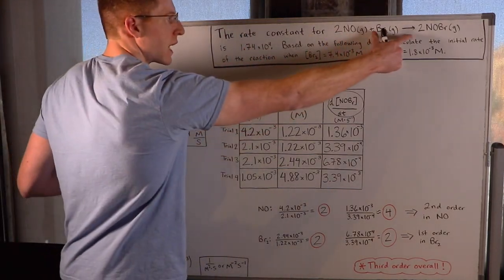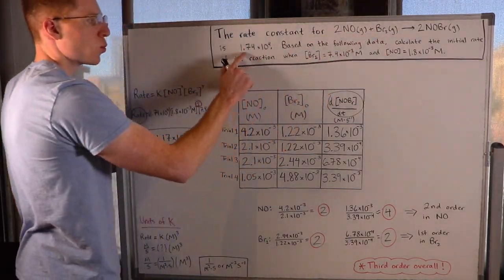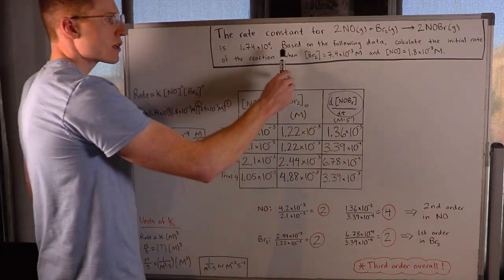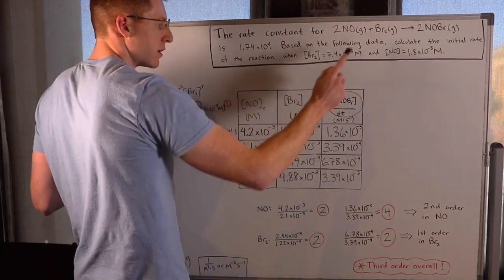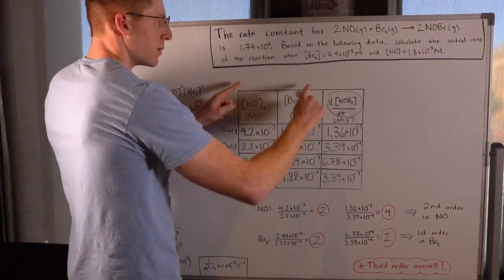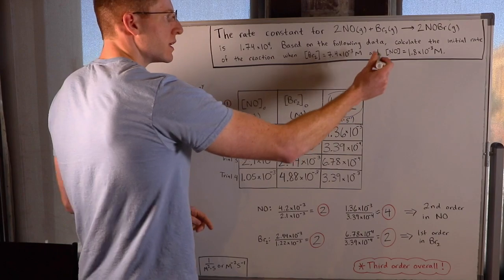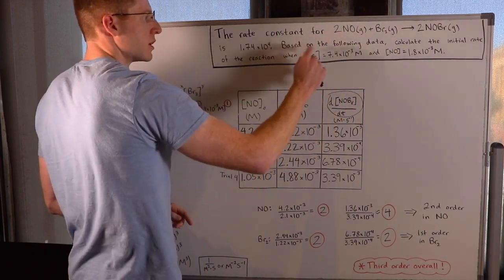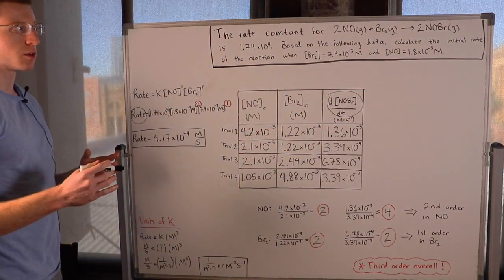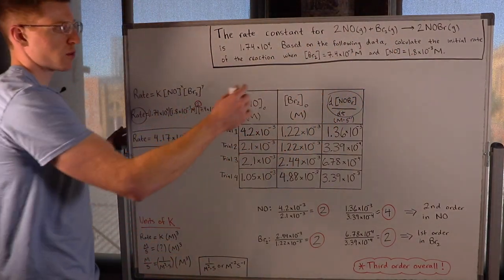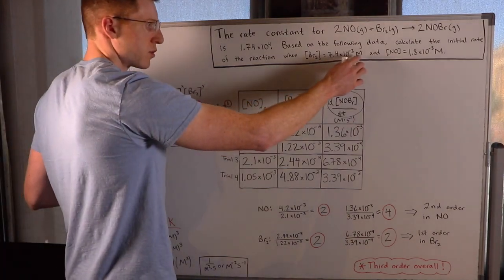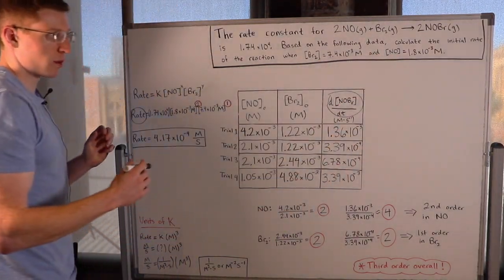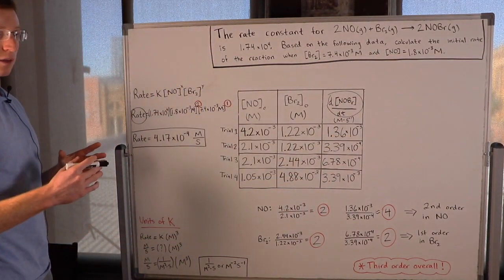The rate constant for this reaction is 1.74 times 10 to the 4. Based on the following data in this table, calculate the initial rate of this reaction when the concentration of Br2 is 7.4 times 10 to the negative 3 molar and the concentration of NO is 1.8 times 10 to the negative 3 molar.